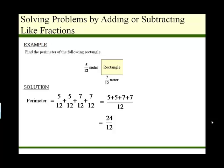This is an improper fraction. It's also a fraction that's not in lowest terms, so we can reduce this and it will become a whole number. So our perimeter is 2 meters.